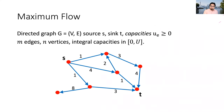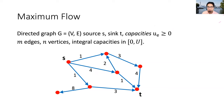Let me formalize the problem. We will work with a directed graph over vertices V and edges E. Let's think of two special vertices, a source S and a sink T. Every directed edge has a capacity UE. The graph has M edges, N vertices, and capacities that are integral between 0 and U.